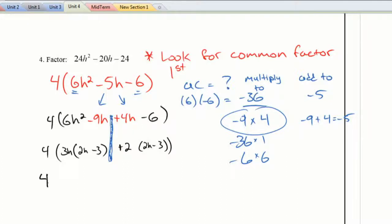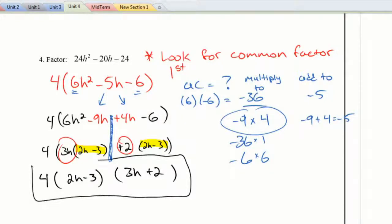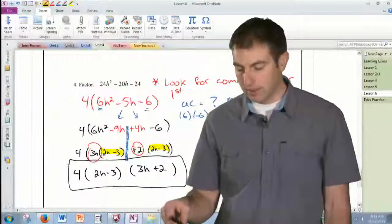Again, the 4 is just coming along for the ride. What's common between the terms? Well, this 2h minus 3. It has to be in there. So I have this 2h minus 3. And what's left? Well, if I pull a 2h minus 3 out of the first one, I'm left with this 3h. And if I pull a 2h minus 3 out of the second term, I'm left with a positive 2. And you can see that that 4 just hung along for the ride, and we didn't even do anything with it. It just gets pulled out at the very beginning. And that is the answer we end up with. And that's it. That's all.